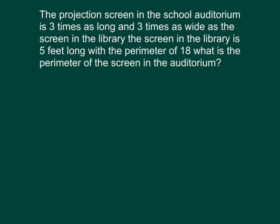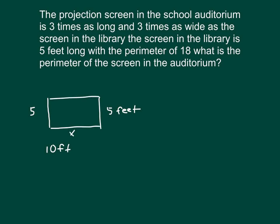Let's go ahead and first figure out the size of the library's screen. The screen in the library is five feet long and the perimeter, or the distance around, is 18 feet. So if this is five feet long, we know that the opposite side is also five feet. Five feet plus five feet gives us 10 feet — and how many more feet do we need to equal 18? Ten feet plus blank equals 18 feet.